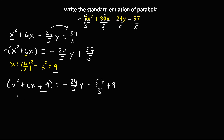Then we can now factor the left side. In factoring this quadratic expression: for the first term, since this is x squared, so we have x. Then the middle term is positive, so plus. And for the last term, 9 is 3 squared, so this is 3. So we get x plus 3, quantity to the power 2, then equals. We need to simplify the right side.